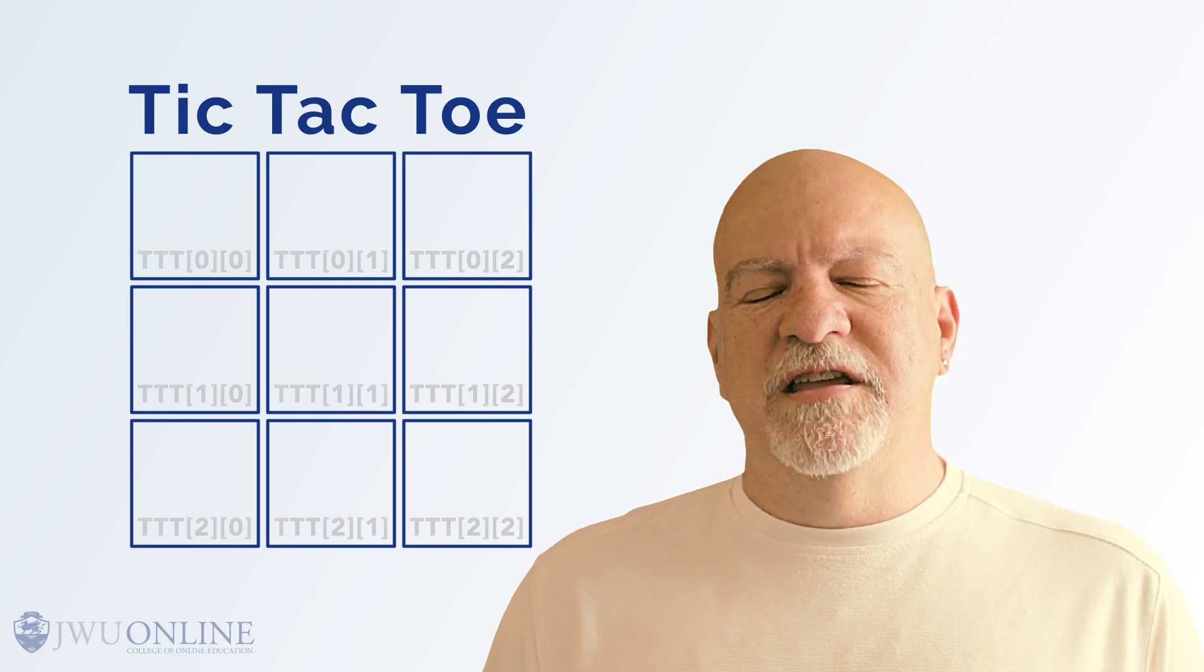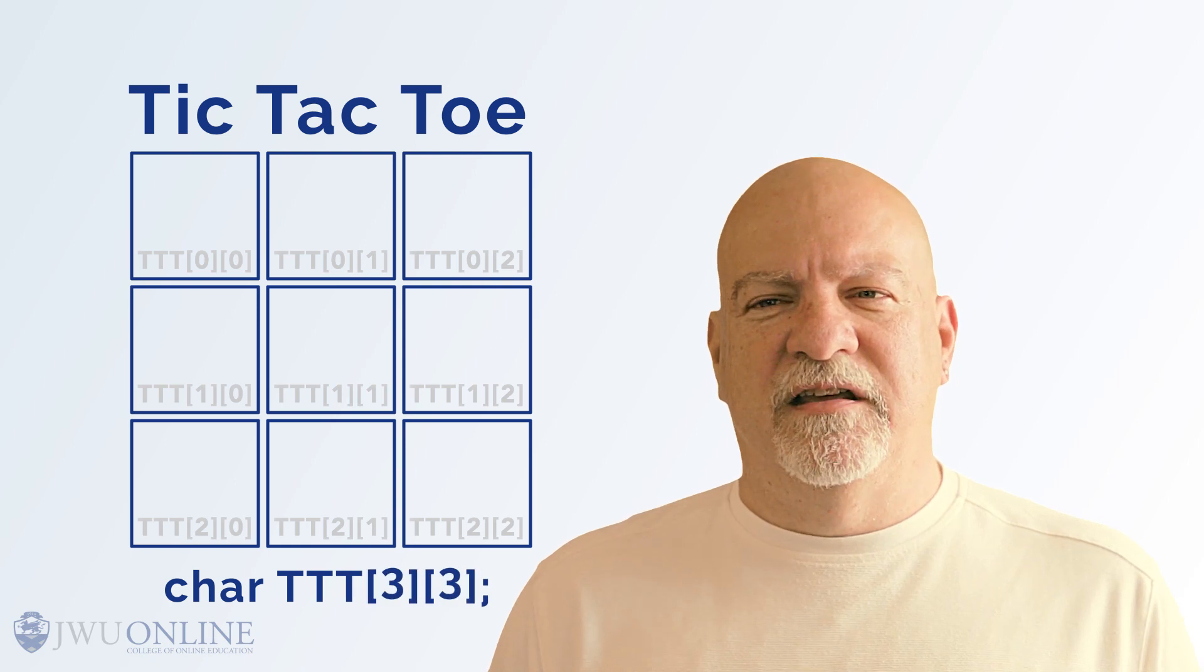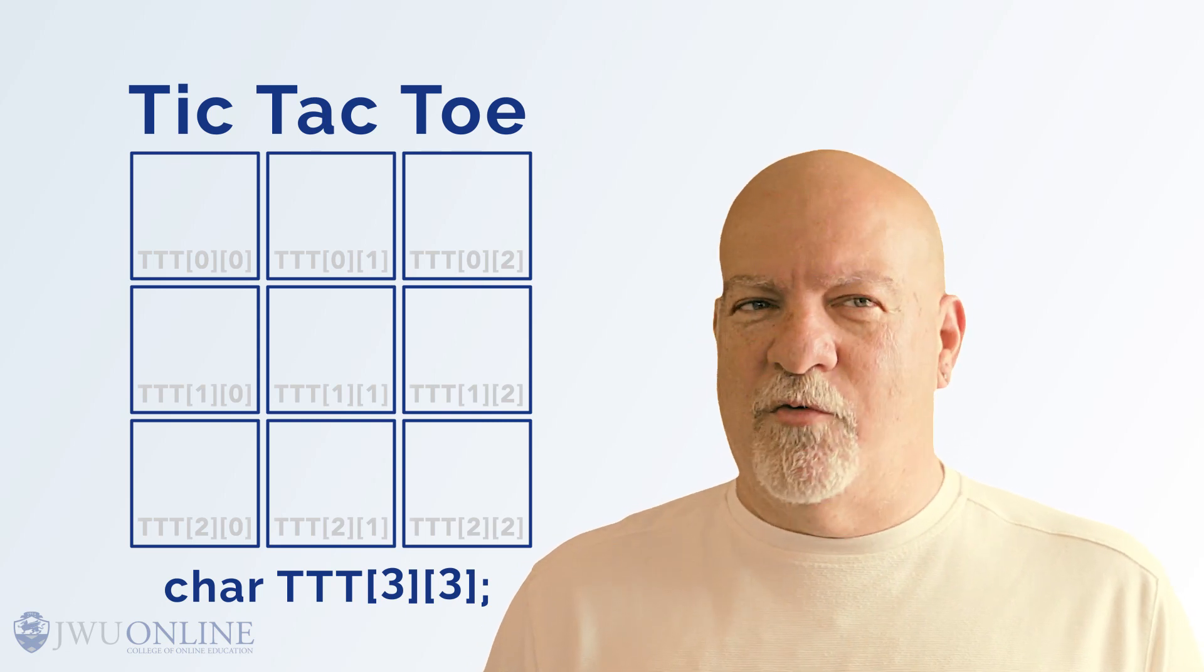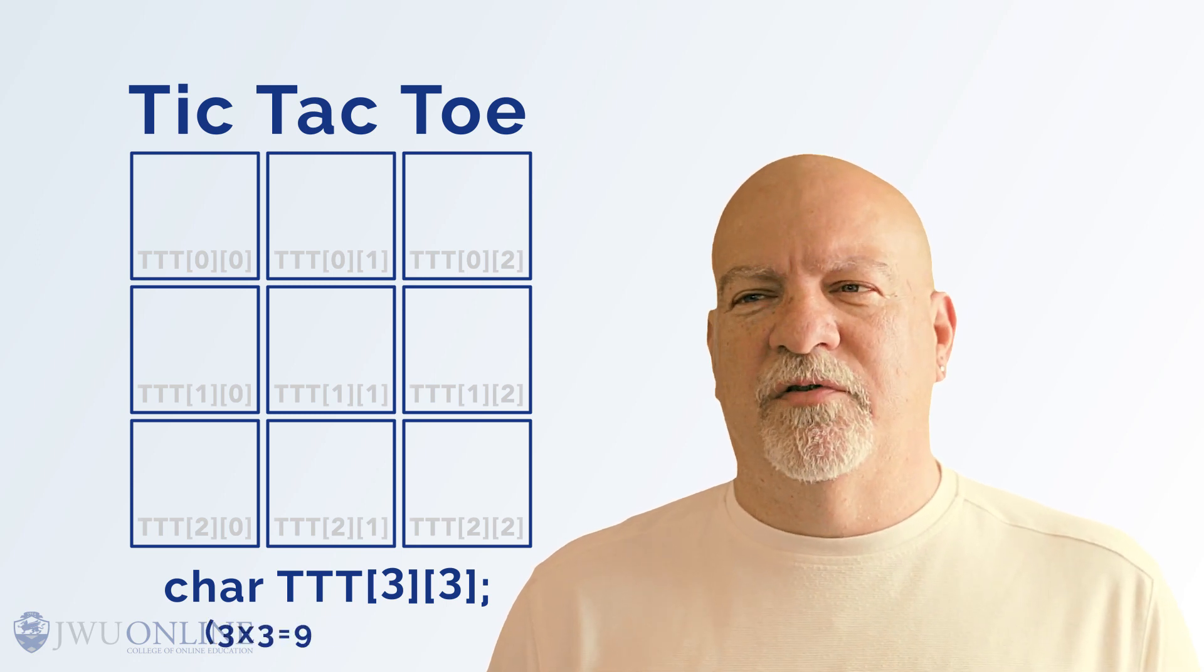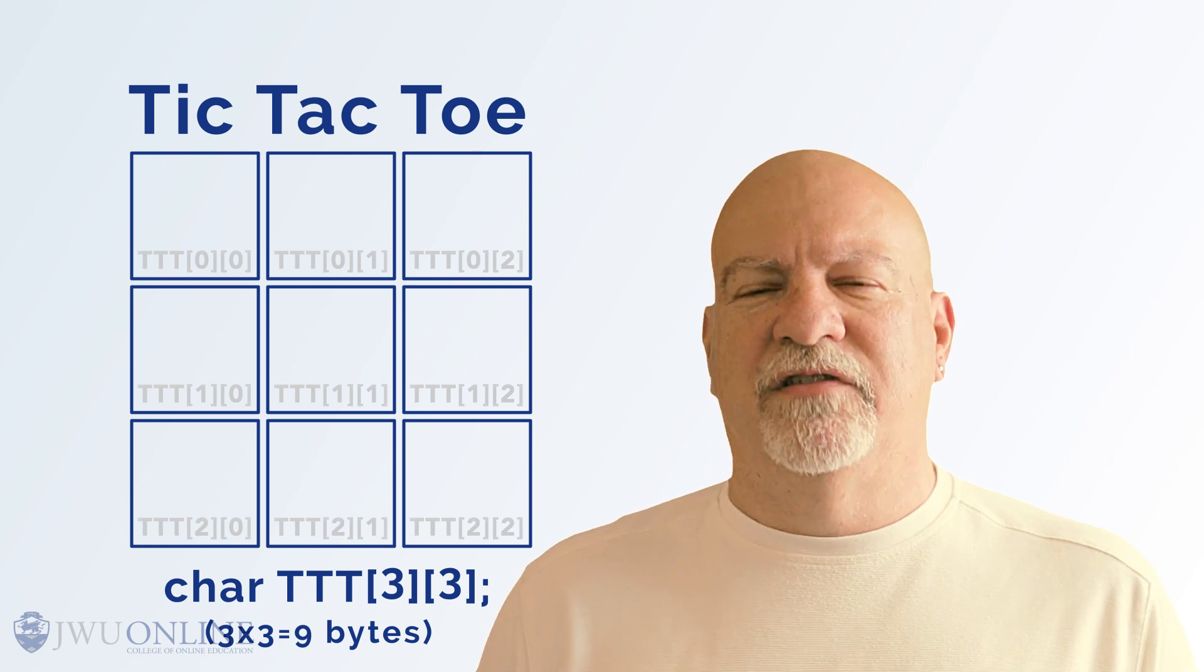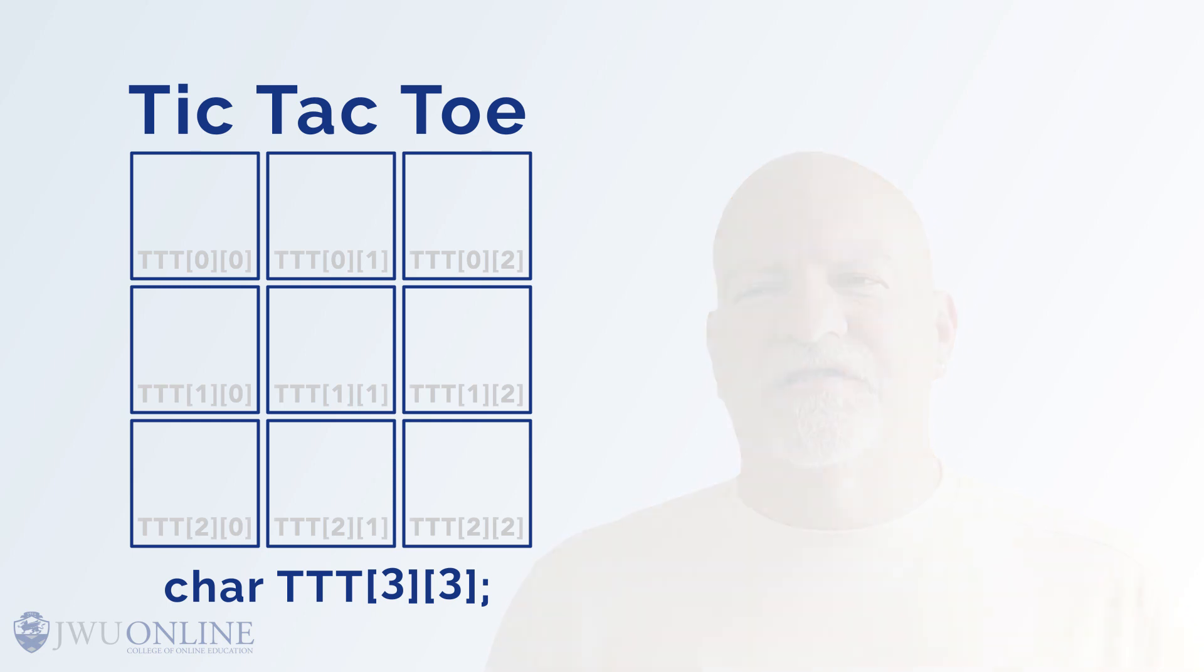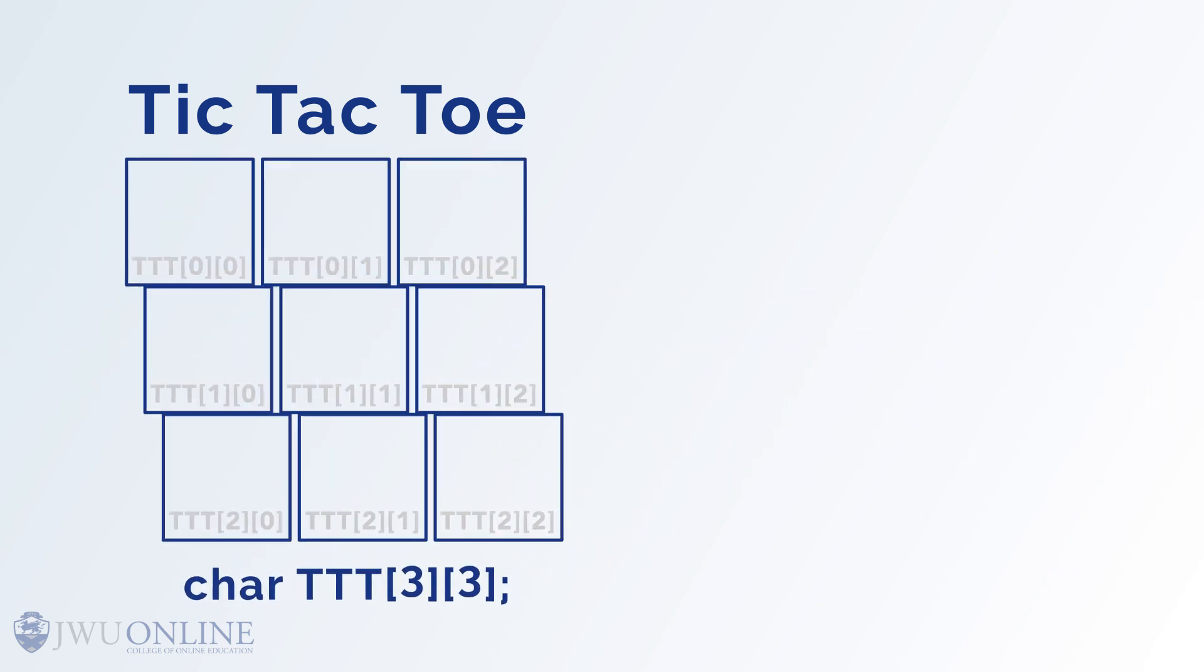In the C programming language, we accomplish this by saying char, T-T-T, square bracket, three square bracket, square bracket, three square bracket, and of course we end with a semicolon. Again, this means assign three by three character types, which again is one byte in length. So, assign nine characters or nine bytes and call them starting at T-T-T. This is where the abstraction comes in. You see, the computer is still storing those nine bytes sequentially and linearly, but the system is allowing us to reference them as a row by column combination.